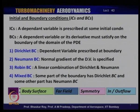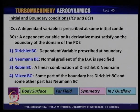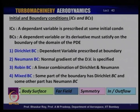Let us take a quick look at initial and boundary conditions. The initial condition is a dependent variable prescribed at some initial condition, which may be at the inlet to the flow domain. You need to prescribe whether the flow is uniform or varying in a cross section — whether the velocity, temperature, pressure, density, energy or enthalpy variables are uniform or constant at the inlet, depending on whether you are analyzing two-dimensional or three-dimensional flow.